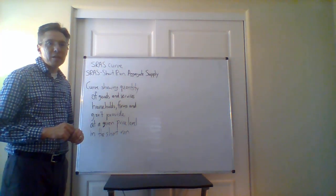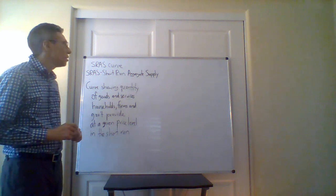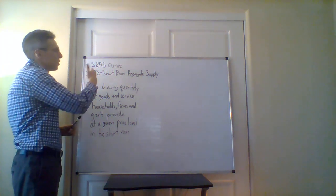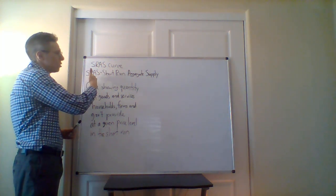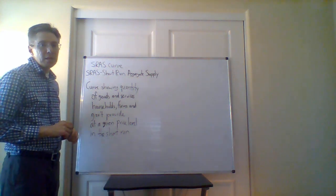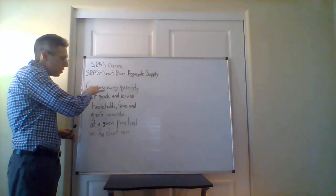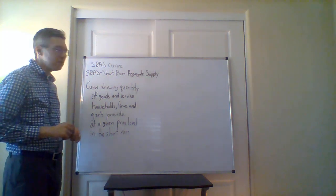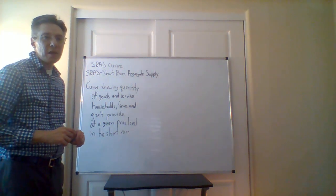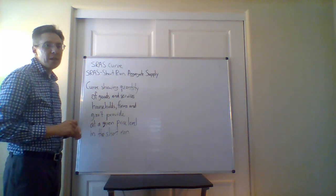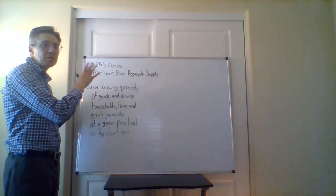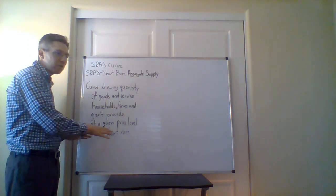In terms of talking about the aggregate demand and aggregate supply model, what we want to cover next is the SRAS curve, which represents the short-run aggregate supply. In terms of the curve, what we're going to show is basically a curve showing the quantity of goods and services households, firms, and the government will provide at a given price level, but again, because it's the short-run.